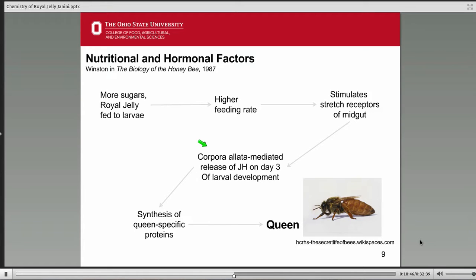Let's follow another of Winston's maps. We see that feeding extra sugars in royal jelly at a higher rate not only stretches the receptors in the midgut of the larvae, it also methylates DNA at specific places — that CpG methylation. This ultimately leads to the release of juvenile hormone, or JH for short, from the corpora alata. The corpora alata is an organ located next to the esophagus of larvae and adults. This hormone ultimately influences the differences between queens and workers. It's no accident that this structure is located next to the esophagus, because this all has to do with feeding — these differences have to be sensed right where all the action is taking place.